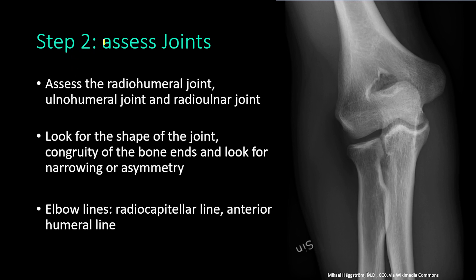Moving to step two, which is assessment of the joints. You assess the radio-humeral joint, the ulno-humeral joint, and the radio-ulnar joint. In each joint you look for the shape, the congruity of the bone ends, and any narrowing or asymmetry in the joint space. The radio-humeral joint here looks normal.